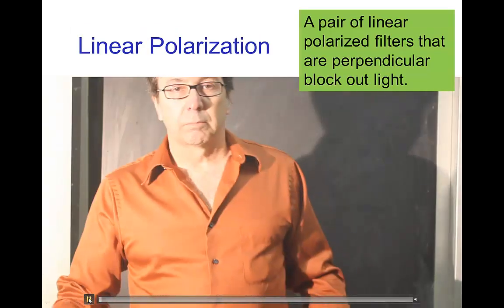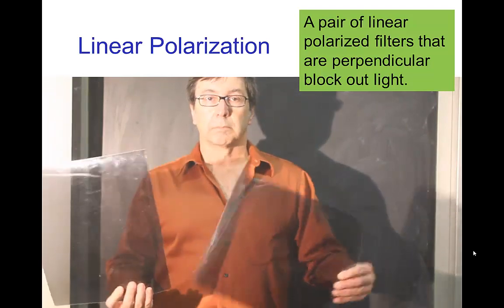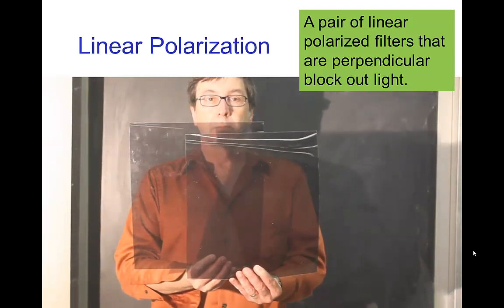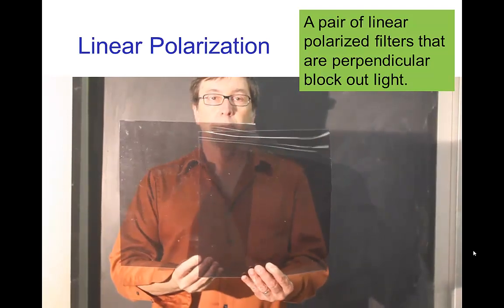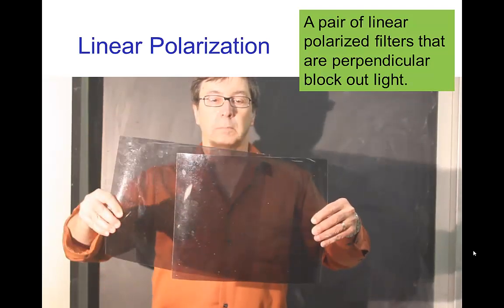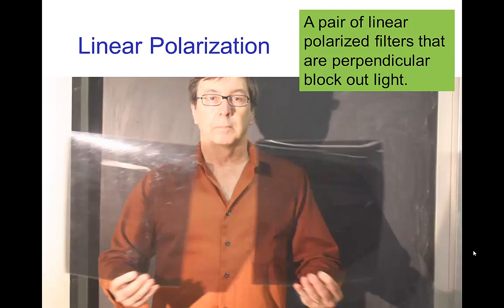Here's an example where I have a couple of linear polarized filters — you can see they're sort of grayish and you can see through them. But when I orient them perpendicular to each other, one is vertical and the other is horizontal. When both are vertical or both horizontal, they both let through that type of polarized light. But when perpendicular, one lets through only horizontal and the other only vertical, so the combination doesn't let through anything.